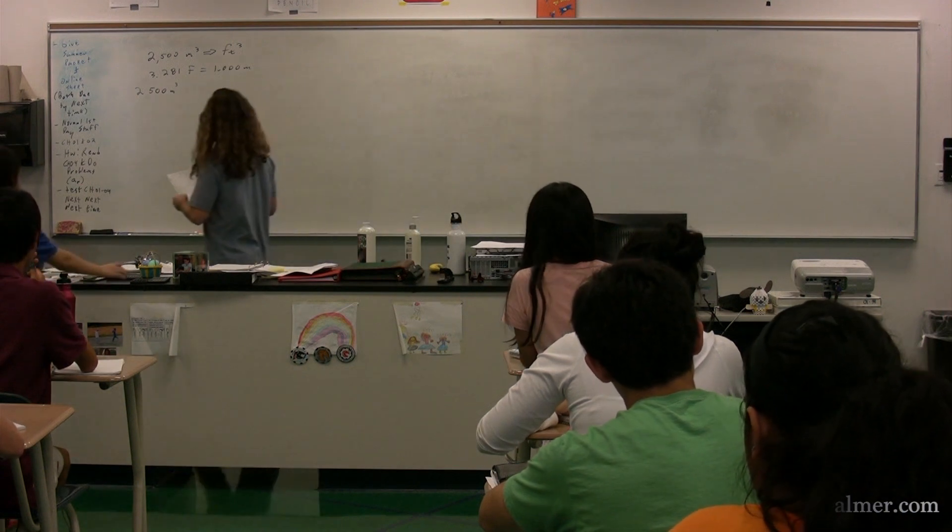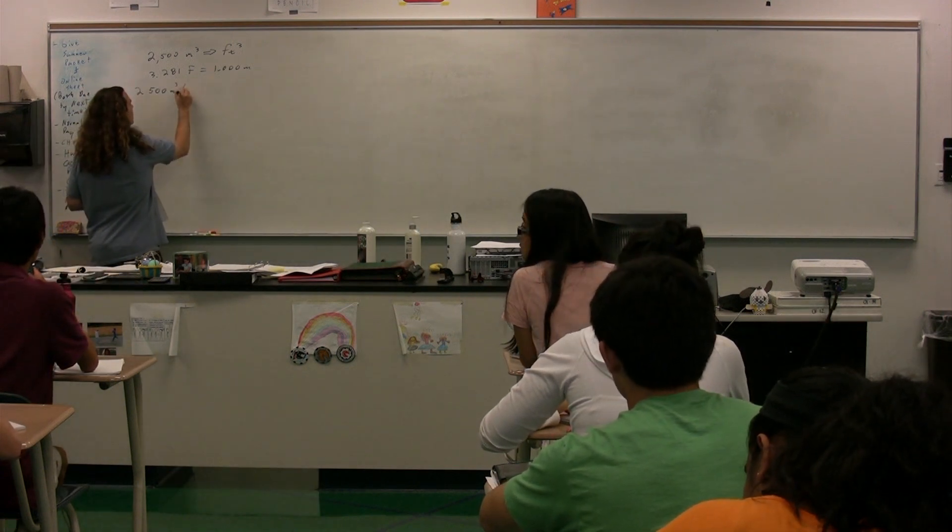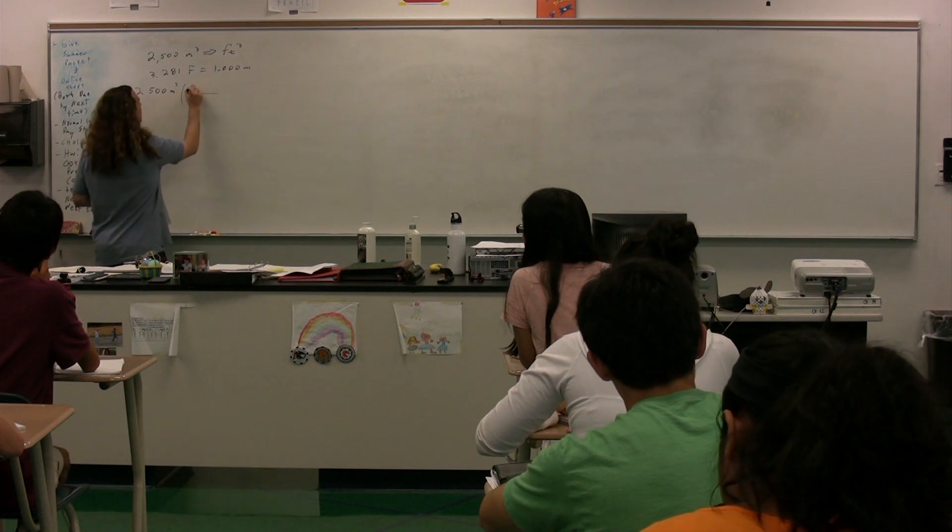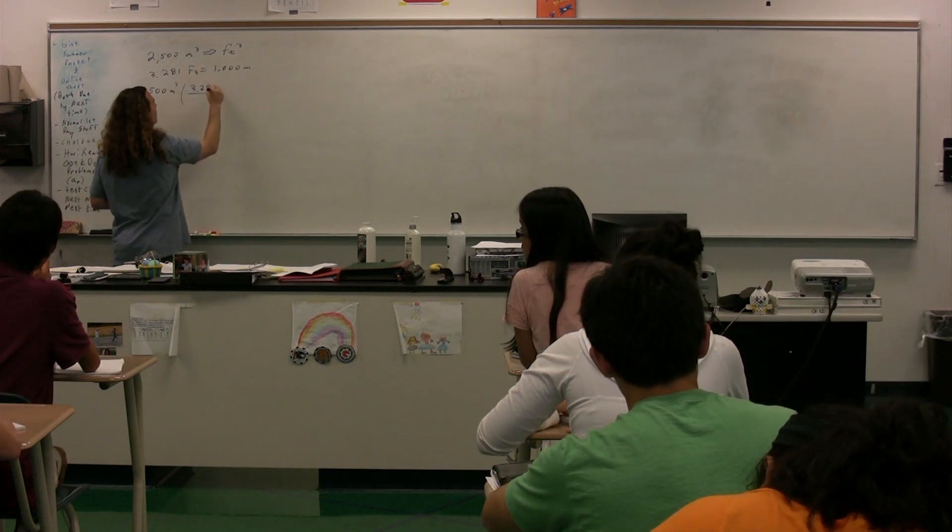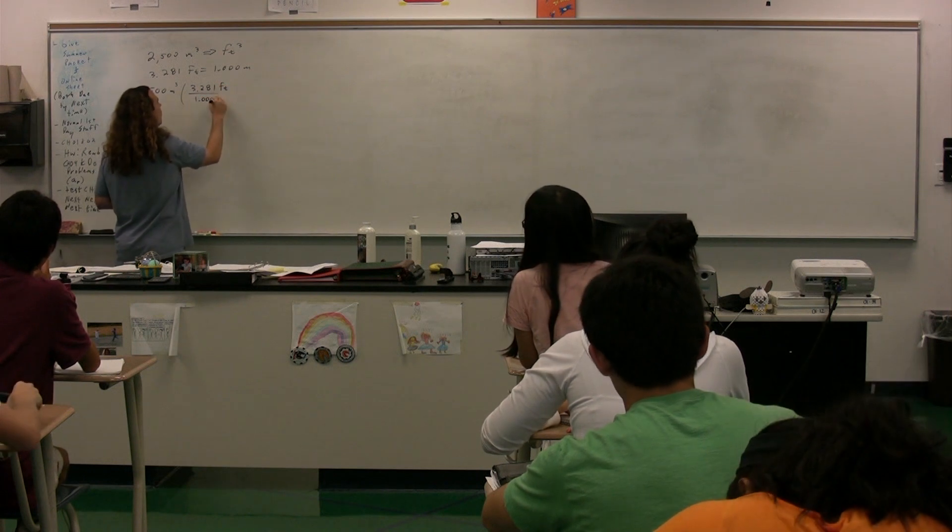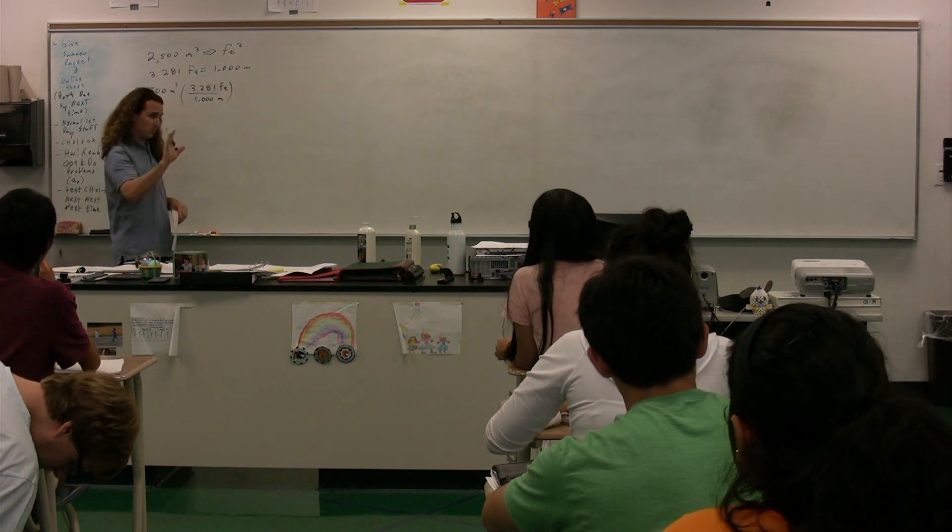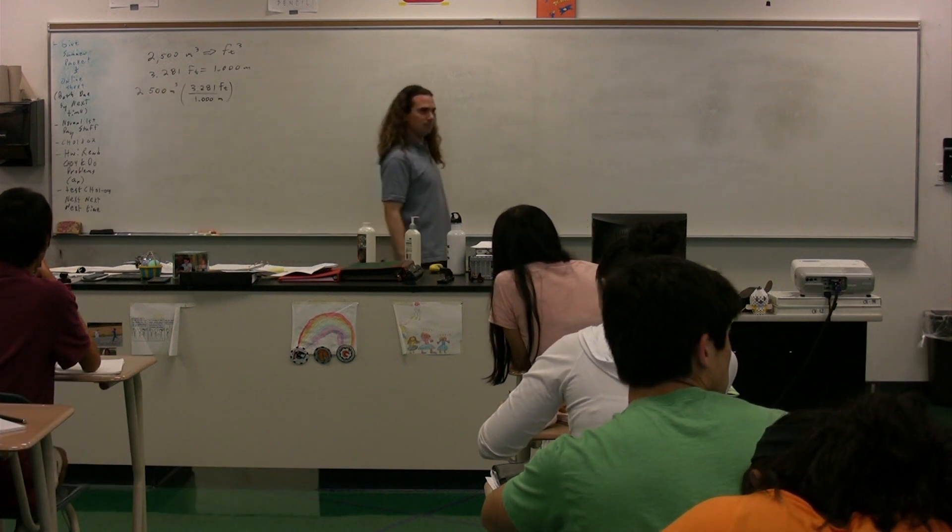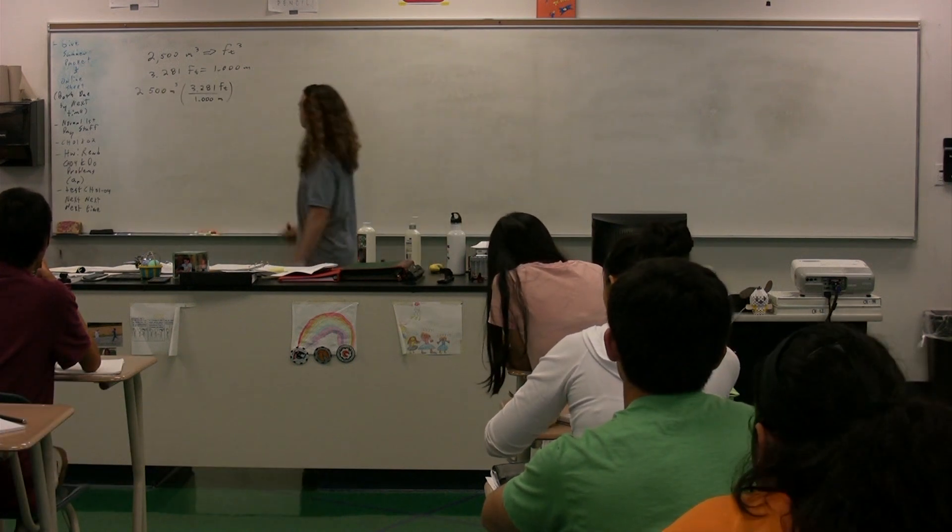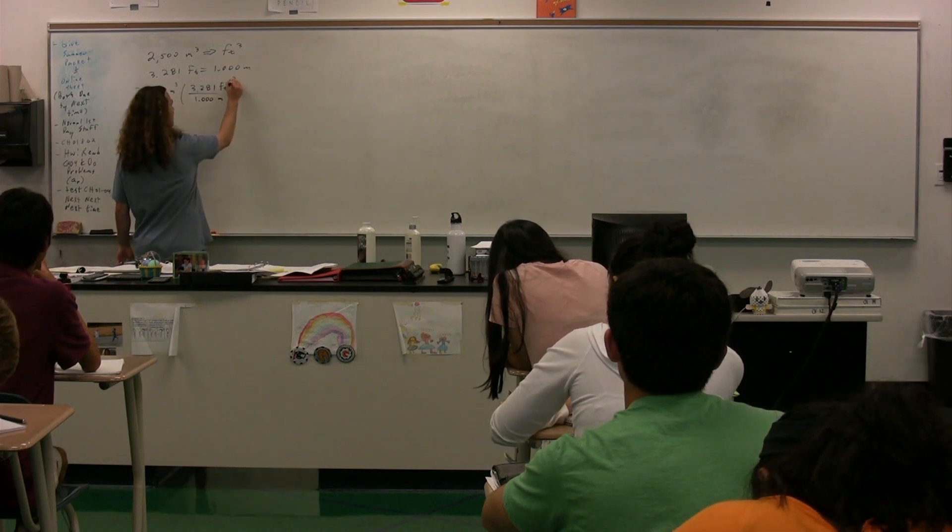So we multiply it by 3.281. I'm sorry, 3.281 feet over 1.00 meters. Okay, so let's be careful. What do you mean by cube the whole thing? So I'm going to do this, right?